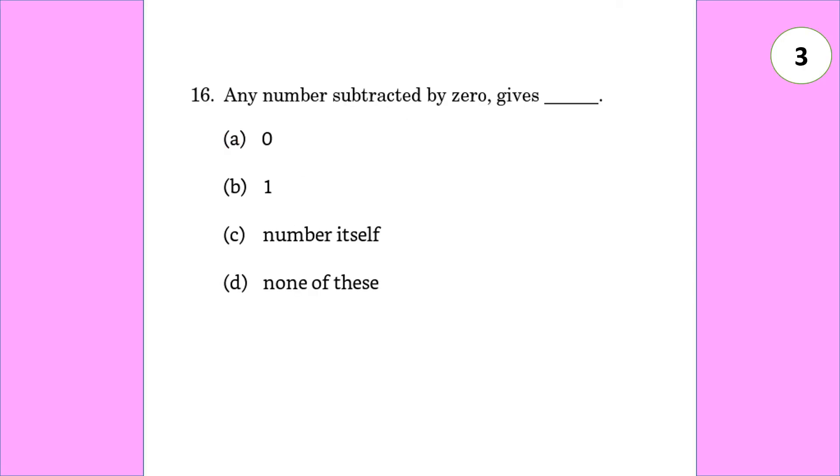Any number subtracted by 0 gives: 0, 1, number itself, none of these. Answer C, number itself.